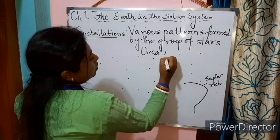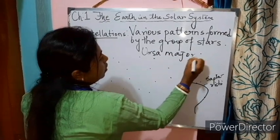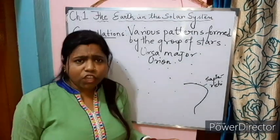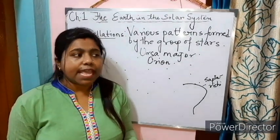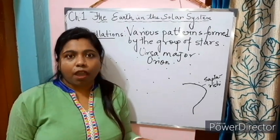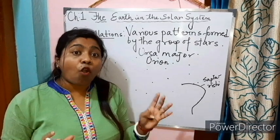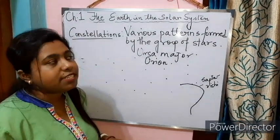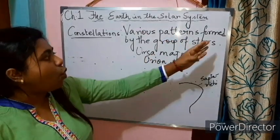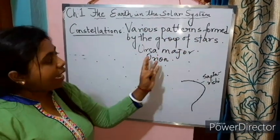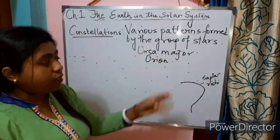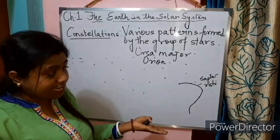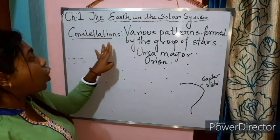Other constellations include Ursa Major and Orion. You may have heard of zodiac signs like Libra, Aquarius, and Gemini — all these are constellations. So, constellations are various patterns formed by a group of stars, like Ursa Major, Orion, Big Bear, and Saptarishi, which you can easily locate in the night sky.